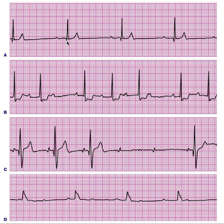First degree heart block is when the PR interval is prolonged. The PR interval represents the electrical wave that goes from the atria through the AV node to the ventricles — and that conduction is slowed. Normal PR interval is 0.12 to 0.20 seconds, so anything more than 0.20 is prolongation. If you look here, you will definitely see more than 0.20 — PR prolongation — so this is first degree AV block.